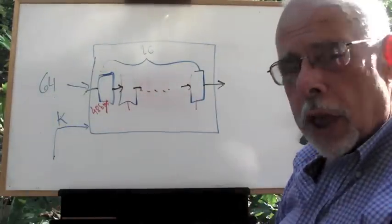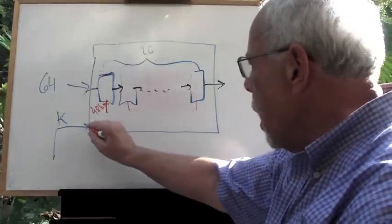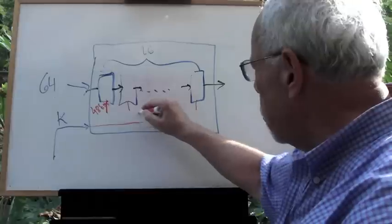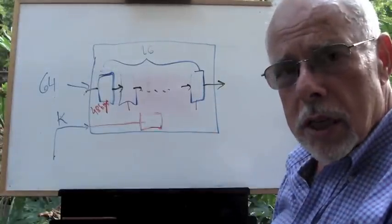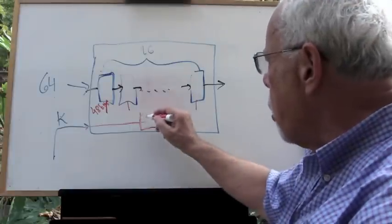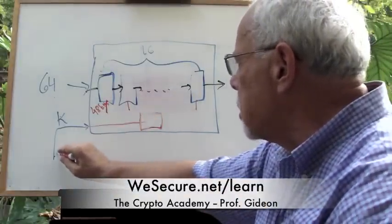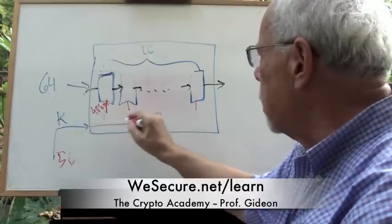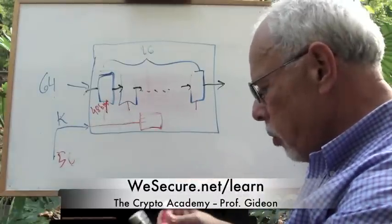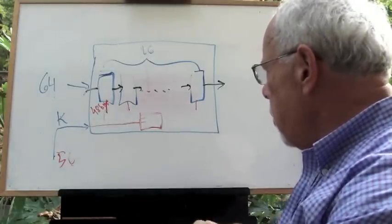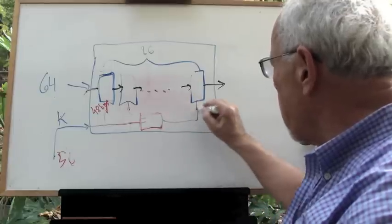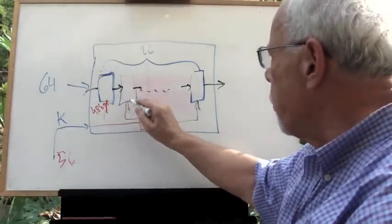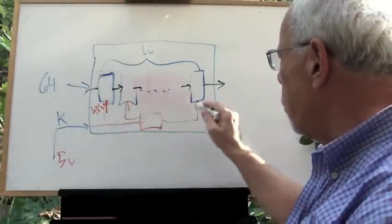How do we get 48 bits? Is it the same? No. Each of those 16 rounds gets a different set of 48 bits. What happens here is that the key comes here into a key processor subcomponent that turns those 56 bits into 48 and 48 and 48. Each of those 48 is different.